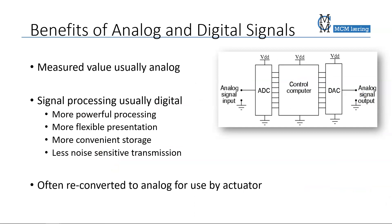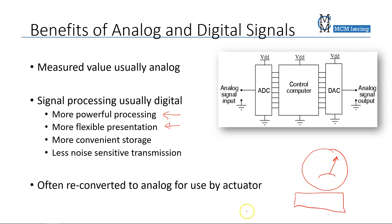Digital signals are more powerful for processing — it is easier to do arithmetic operations like summing, multiplication, and dividing. They also offer more flexible presentation: for analog signals you basically have a gauge, but for digital signals you have all sorts of displays with numbers and text. Digital data is also more convenient to store, for example on a memory stick, and it has less noise-sensitive transmission. As long as you can distinguish a binary 0 from a binary 1, it doesn't matter if the signal is a bit noisy.